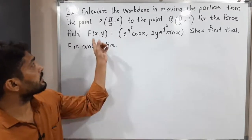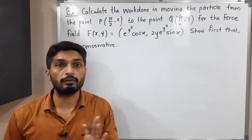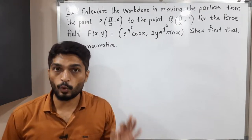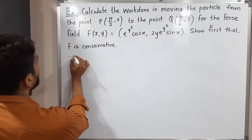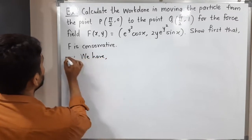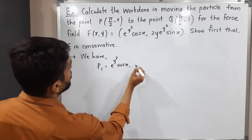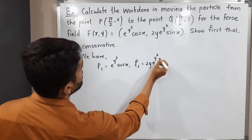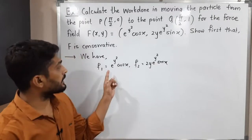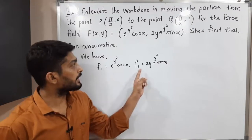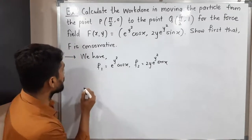You can easily see F is a function from R2 to R2. When you have a function F from R3 to R3, we find curl of F bar, prove that it is zero, and then say it is conservative. But here it has only two components, so the technique is a little bit different. Let me show it here.